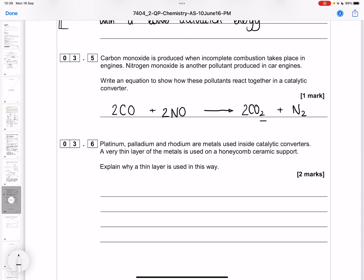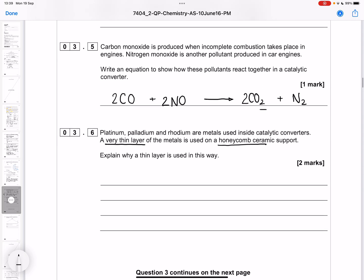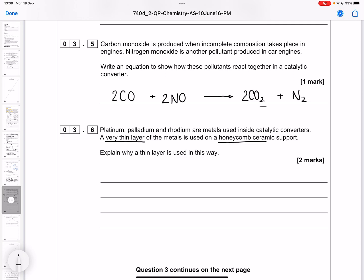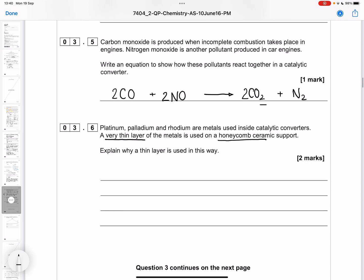Platinum, palladium and rhodium are metals used inside a catalytic converter. A very thin layer of metals is used on a honeycomb support. Explain why a thin layer is used in this way. These metals are all very expensive, so we want to reduce the amount. At A-level, you can't just say to make things cheaper. We're going to use a very thin layer to reduce the amount of metal needed.